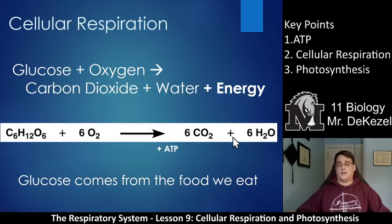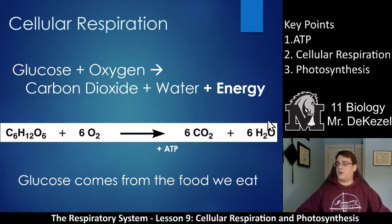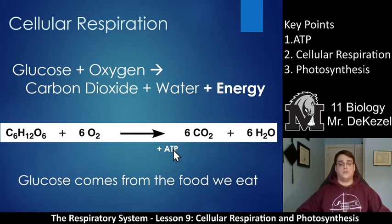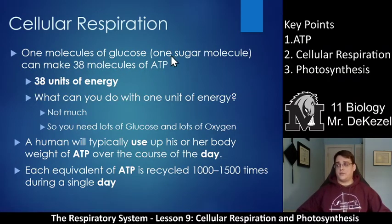Here is the overall equation. We've got glucose here, we've got oxygen here, we have CO2 here, water here, and energy or ATP. So glucose and oxygen combine to form carbon dioxide, water, and energy. And we get this glucose from the food that we eat — whether that be pasta, food stored as fat and then broke down. We use glucose and oxygen to make energy and CO2. One molecule of glucose or one sugar molecule can make 38 molecules of ATP.